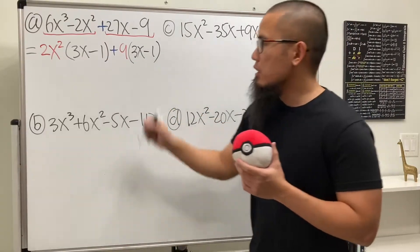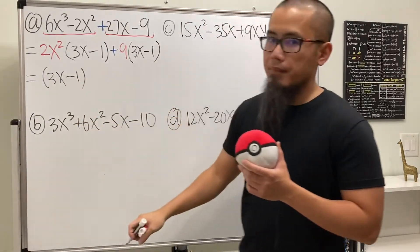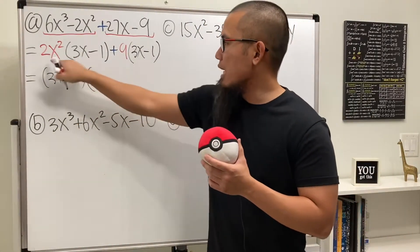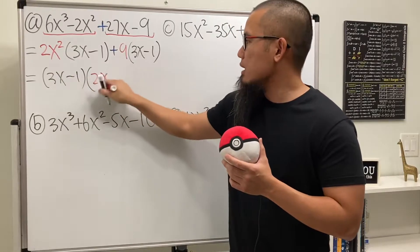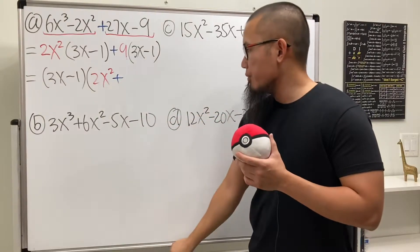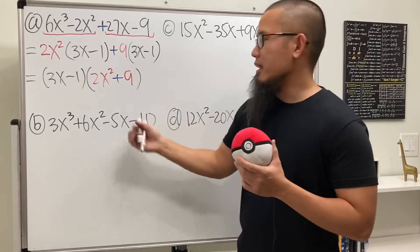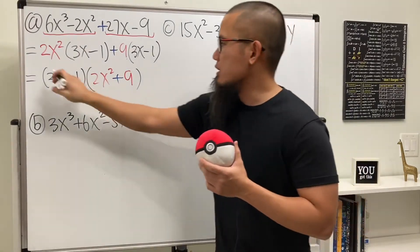So we can factor them out again. So this right here becomes 3x minus 1. And for the second thing, we'll just have the leftover, which is 2x squared plus 9. And then we are done. This right here is actually not factorable, so we just stop right here.